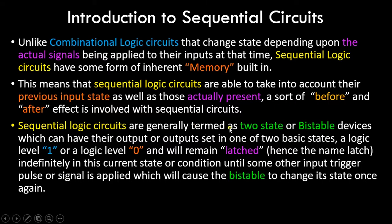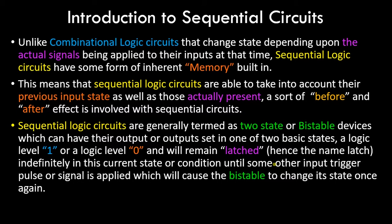These logic circuits are generally termed as two-state or bistable devices, which can have their output set in one of two basic states — logic level one or logic level zero — and they remain in that state, latched (hence the name latch), indefinitely in this current state or condition until some other input trigger or pulse is applied, which causes their state to change into another state.